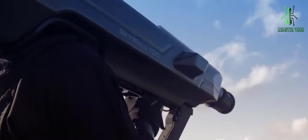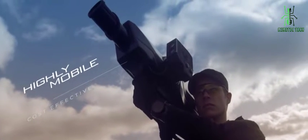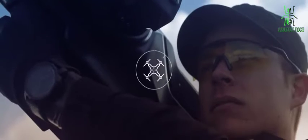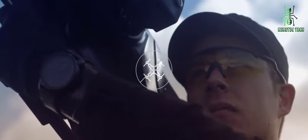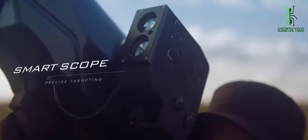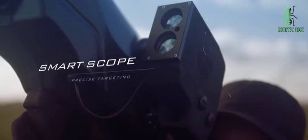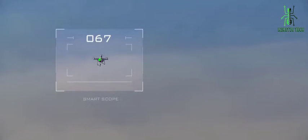The Skywall 100 is a counter-UAS, unmanned aircraft system, device that uses a net fired from a shotgun to entangle and bring down drones. It can be used in both outdoor and indoor settings, has a range of up to 100 meters, and can take down drones of up to 20 kilograms.